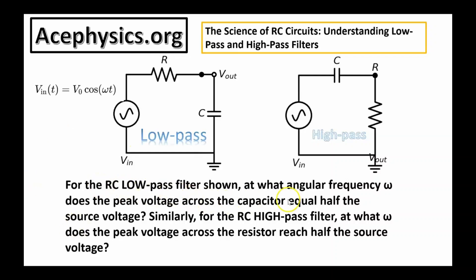For the RC low-pass filter shown, at what angular frequency omega does the peak voltage across the capacitor equal half the source voltage? Similarly, for the RC high-pass filter, at what angular frequency omega does the peak voltage across the resistor reach half the source voltage? Here's one type of low-pass filter — a power supply connected to an RC circuit where the output voltage is measured across the capacitor. One way to make a high-pass filter is using the same circuit but measuring the output voltage across the resistor.